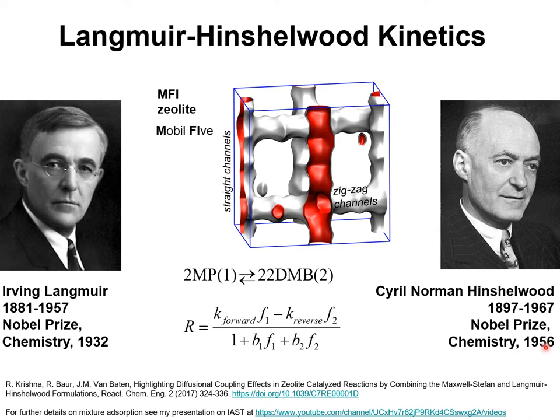To take just one example, for zeolite-catalyzed isomerization of 2-methylpentane to produce 2,2-dimethylbutane, the reaction rate expression is written in a form where the numerator contains the forward reaction rate constant times the partial fugacity of component 1 (2-methylpentane) in the bulk fluid phase, minus a reverse reaction rate constant K-reverse times the partial fugacity for component 2 (2,2-dimethylbutane) in the bulk fluid phase.